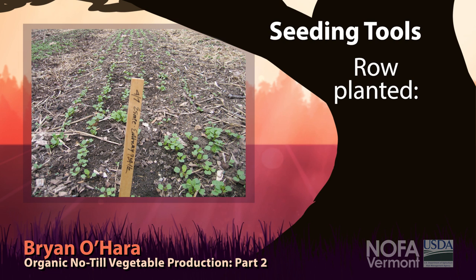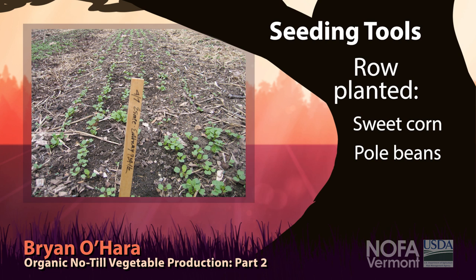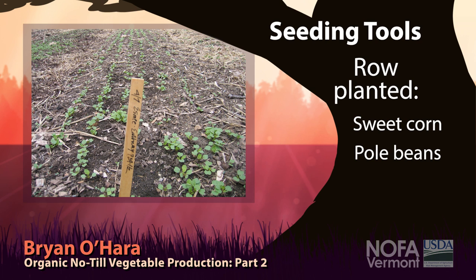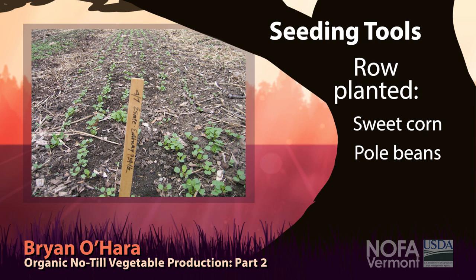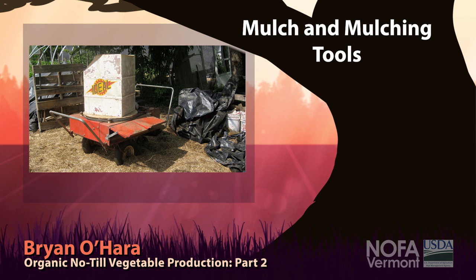We still seed certain crops in rows — sweet corn is always in a row, pole beans are in rows, winter squash is in rows. For large-seeded crops with the seeder, we actually rip a furrow first with a hoe or a shovel on a tractor on the cultivating frame, and then run the seeder down the furrow. So we still do that kind of thing for our limited amount of large-seed seeding.